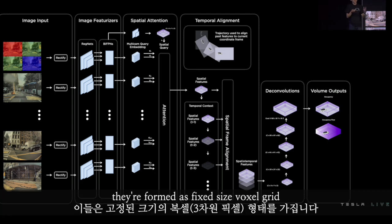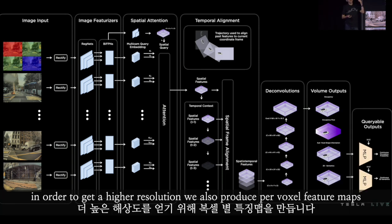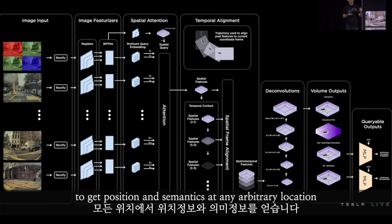The output is formed as a fixed-size voxel grid, which might not be precise enough for planning and control. In order to get higher resolution, we also produce per-voxel feature maps, which we feed into an MLP with 3D spatial point queries to get position and semantics at any arbitrary location.